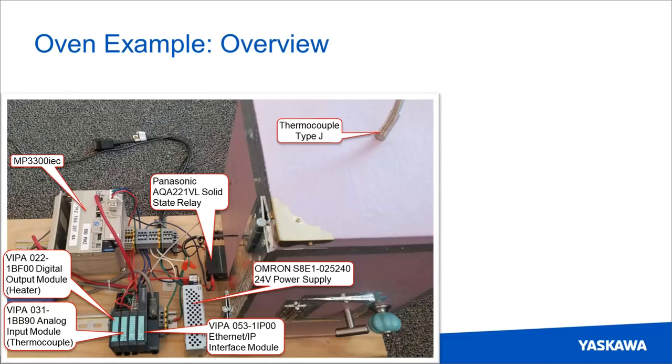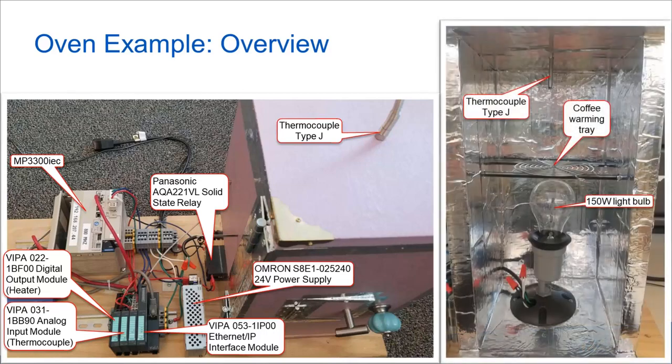So for an example, here's a small oven demo that uses the MP3300 in conjunction with the digital output VIPA module to pulse a light bulb heater. And the temperature feedback is provided through a thermocouple tied into a VIPA analog input module. The picture on the right is the inside of the oven with the door opened.